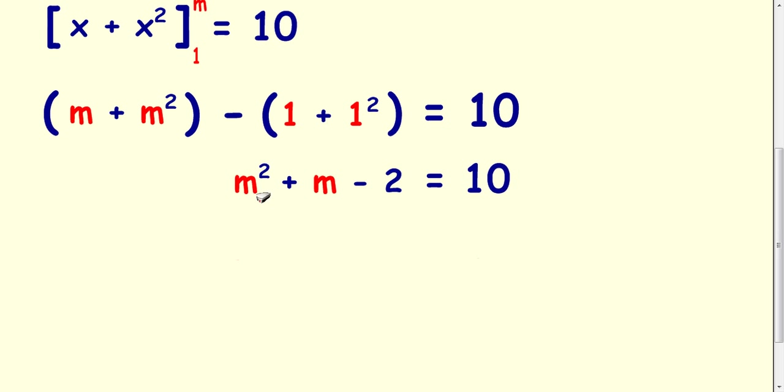What we have now is a quadratic. And in order to solve a quadratic equation, we let it equal 0 and then factorize. So we need to get this 10 over here. So we subtract 10 from both sides to leave us with m² plus m take away 12 equals 0.